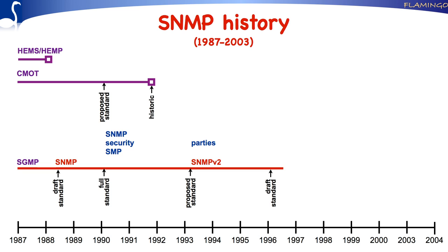The IESG, the Internet Engineering Steering Group, decided to remove all new security functions from the SNMP v2 proposal. At the end, SNMP v2 therefore got the same community-based security mechanism as SNMP v1. Let's listen to Bert Wijnen, who is one of the core developers of SNMP, to understand what went wrong with standardization of SNMP v2.